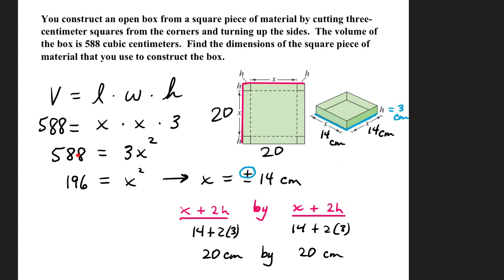That gives us 3x squared equals 588. Divide by 3, x squared equals 196. Extracting square roots, x is positive or negative 14. The square root of 196 is 14. Because of the context of the problem, we want to take the positive one. So that tells us we have a 14 by 14 by 3 open top box.